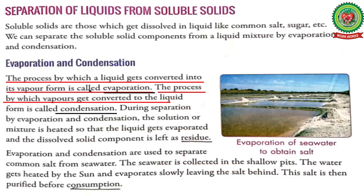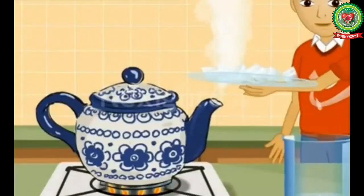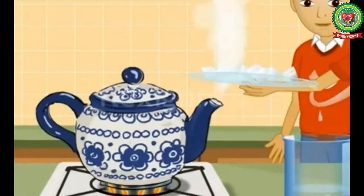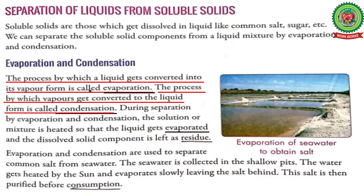Next is condensation. The process by which vapors get converted to the liquid form is called condensation. Mark this definition of condensation in your book. So students, if vapor cools down, it gets converted into liquid form, and this process is called condensation.